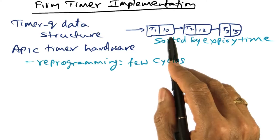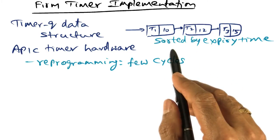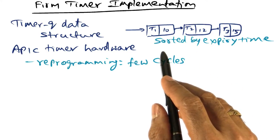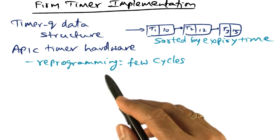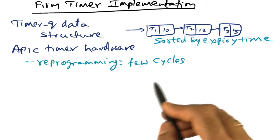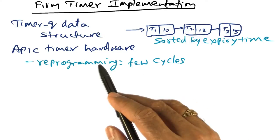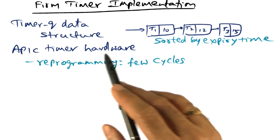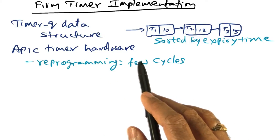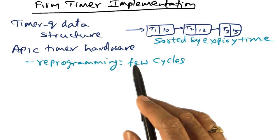If the task at the head of the queue had its timer event go off and needs to be reprogrammed, all we need to do is execute a few instructions in modern processors to reprogram that one-shot timer to go off at the next one-shot interval.